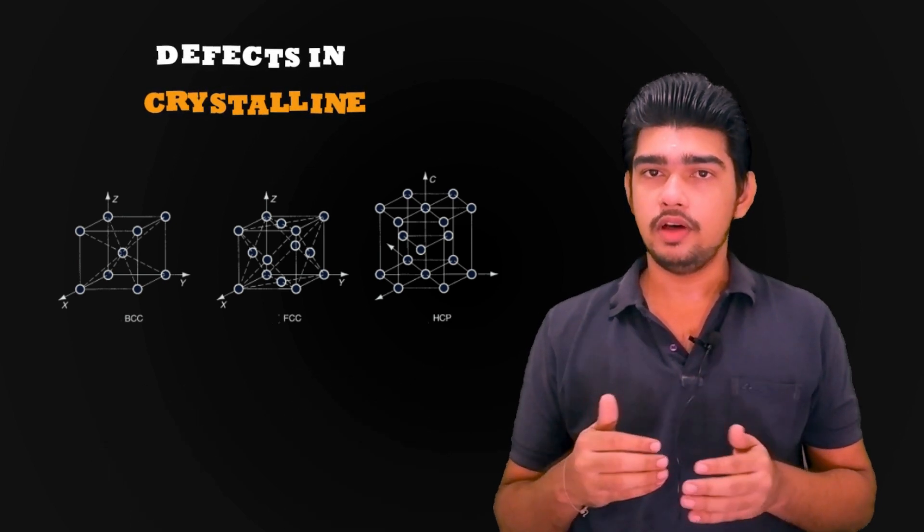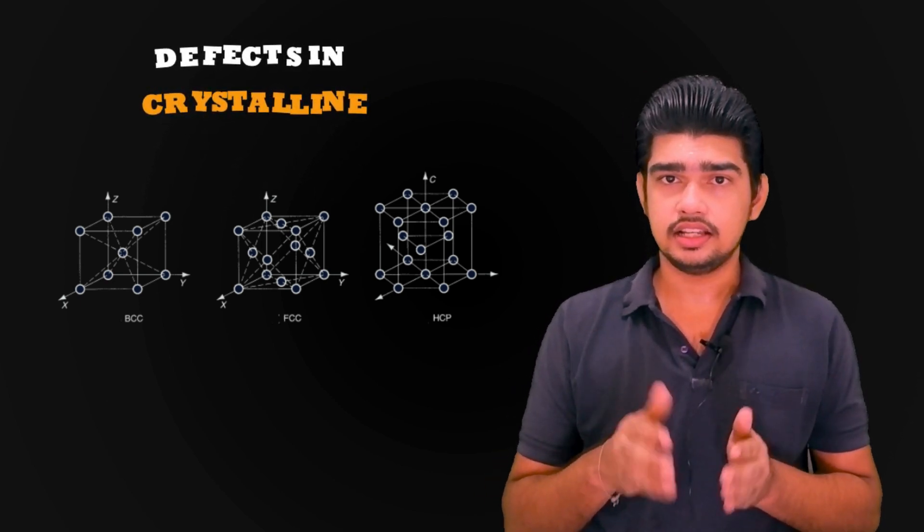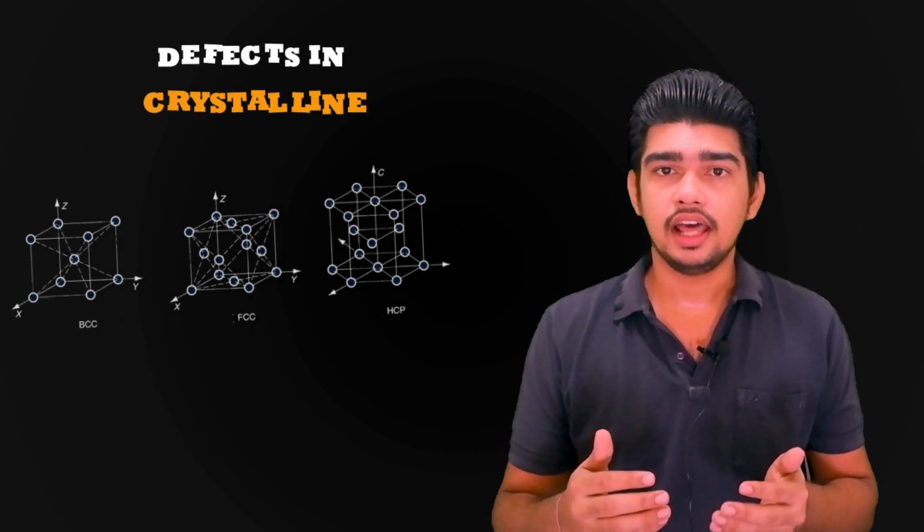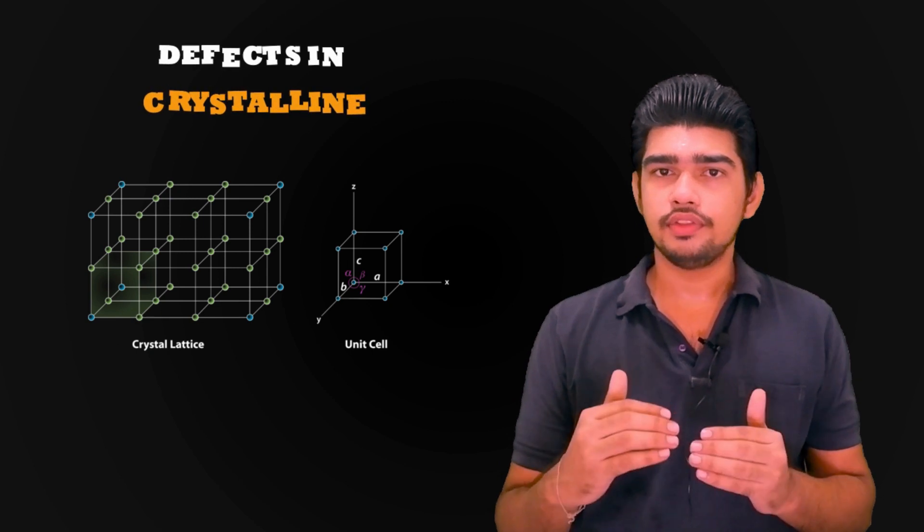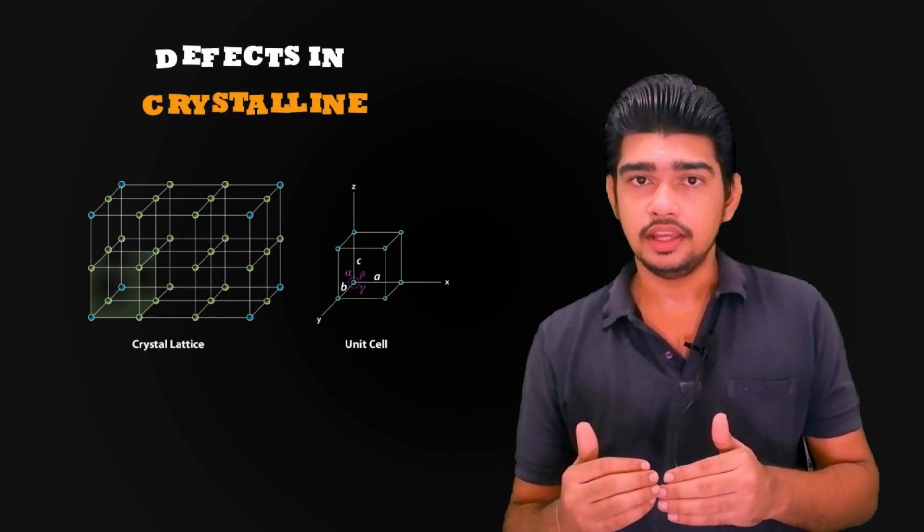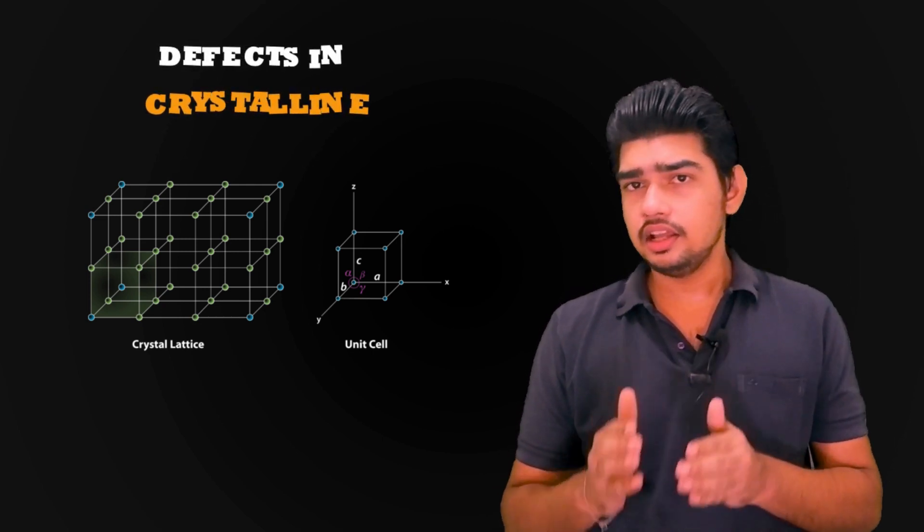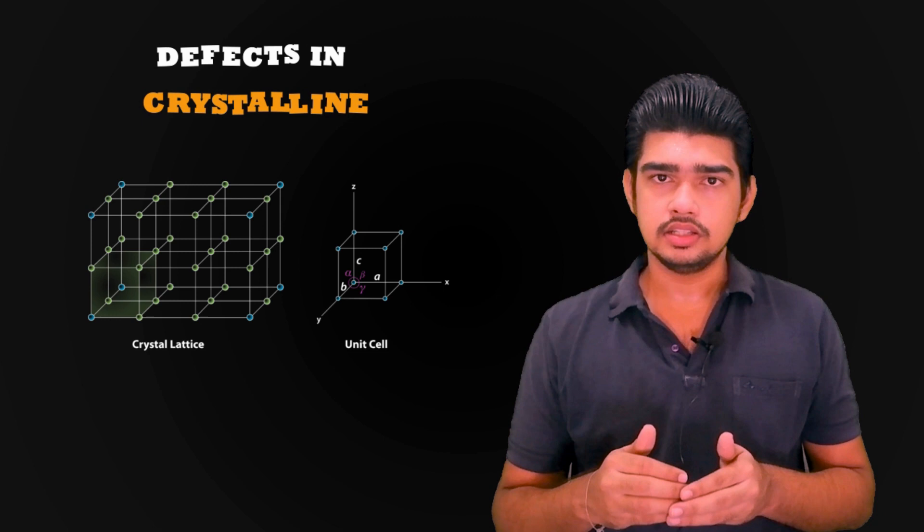However, there are various reasons why a crystalline lattice structure may not be perfect. The imperfection often arises naturally because of the inability of the material during solidification to continue the replication of unit cells indefinitely without interruption. Grain boundaries in metals are an example.